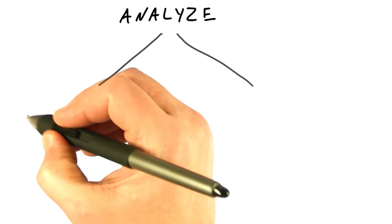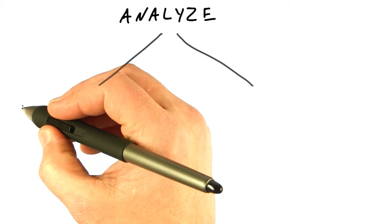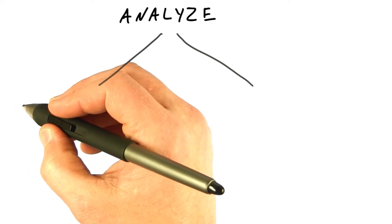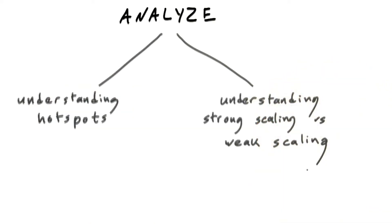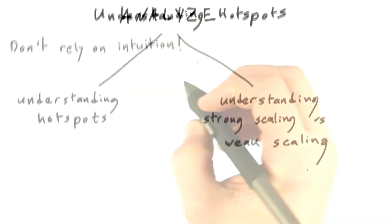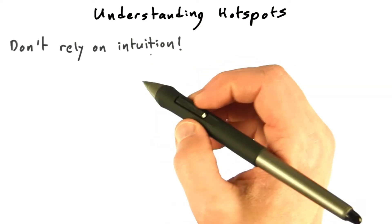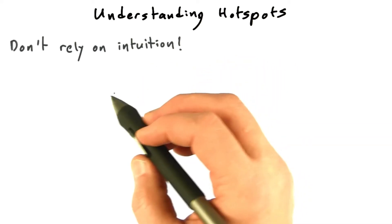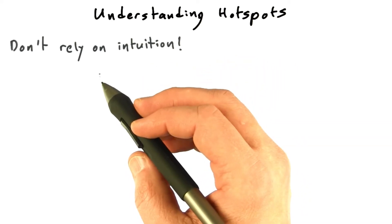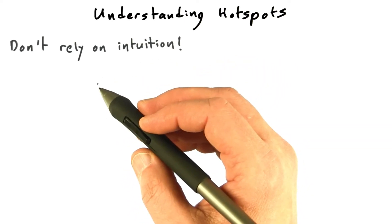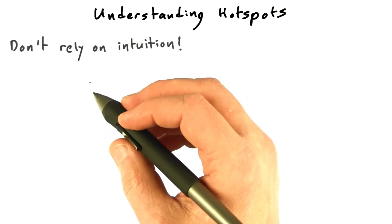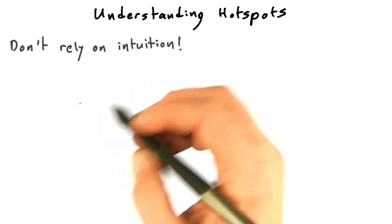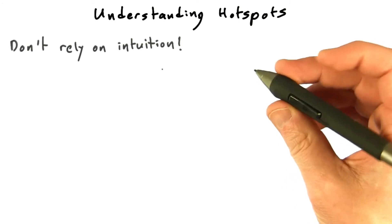There are really two components to the analyze stage: understanding where your application spends its time, and understanding what you want to do with the additional parallelism. Understanding hotspots is pretty straightforward. Often the programmer will have some intuition for this — some idea where the time is being spent in their code. But intuition can be wrong, and there's no substitute for data. So don't rely on intuition.